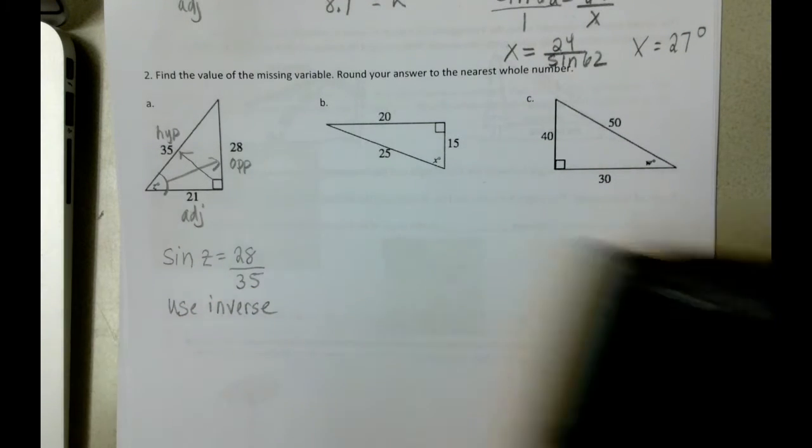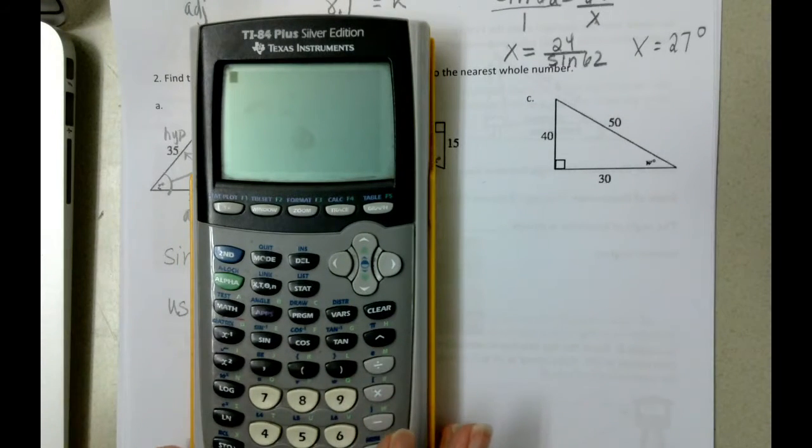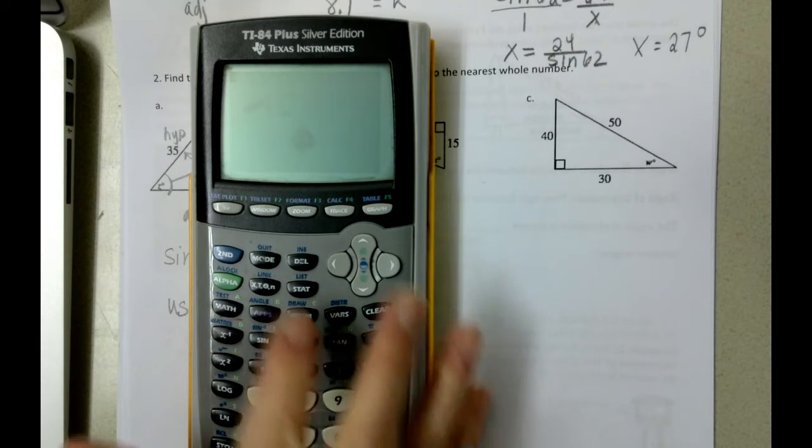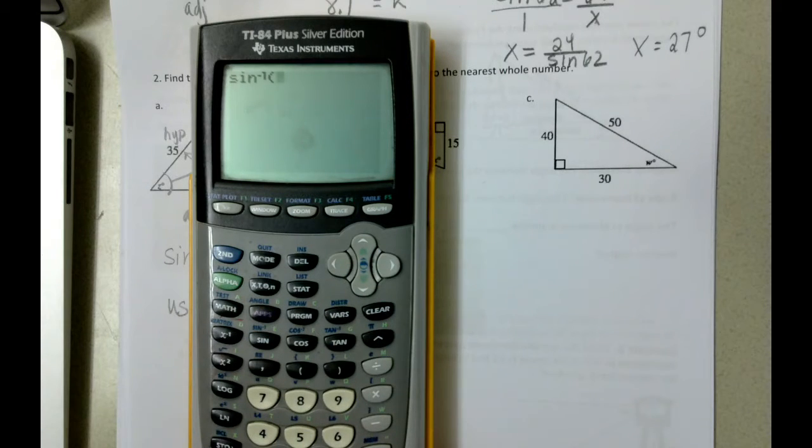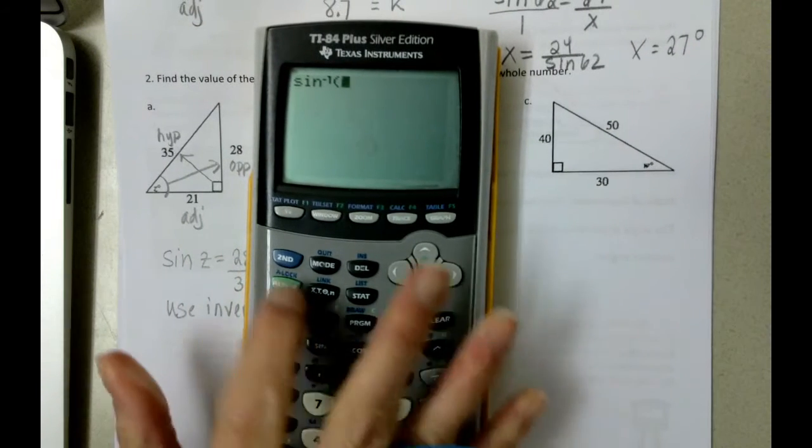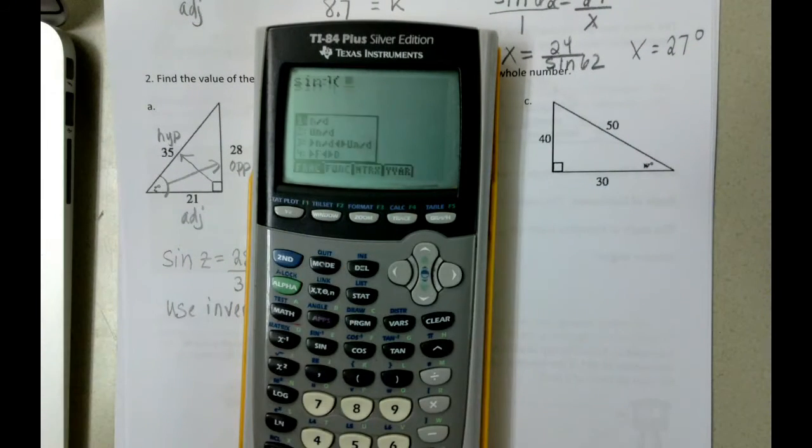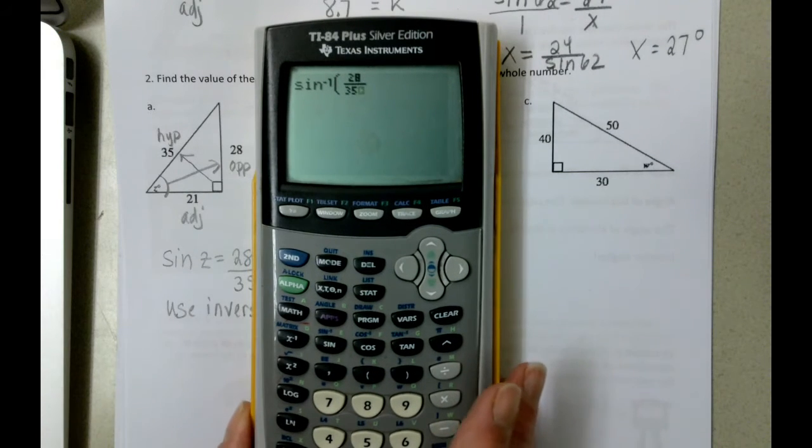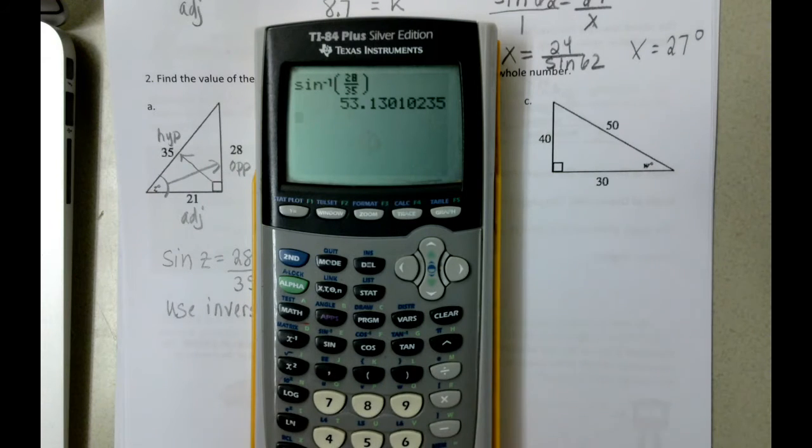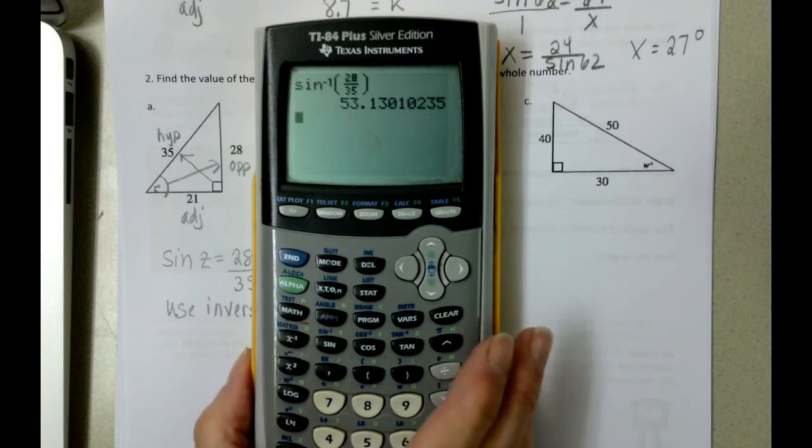When we pull up my calculator, when you type it into decimals, it's going to look like that. And then our fraction is 28 over 35. We're going to round to the nearest whole number, so it's 53.1. So we're going to be left with Z equals 53.